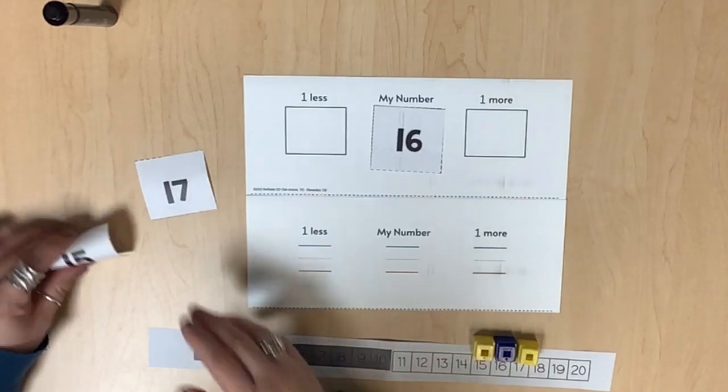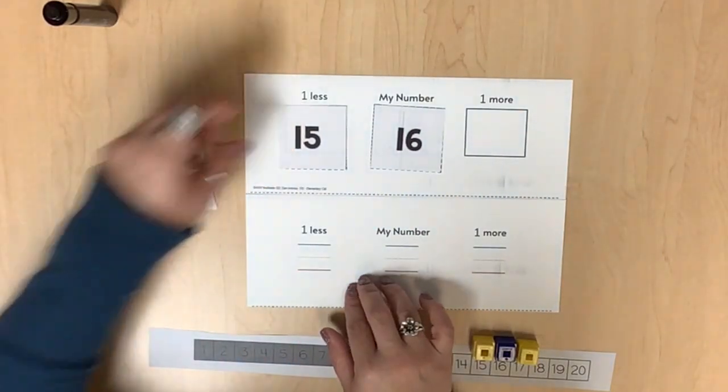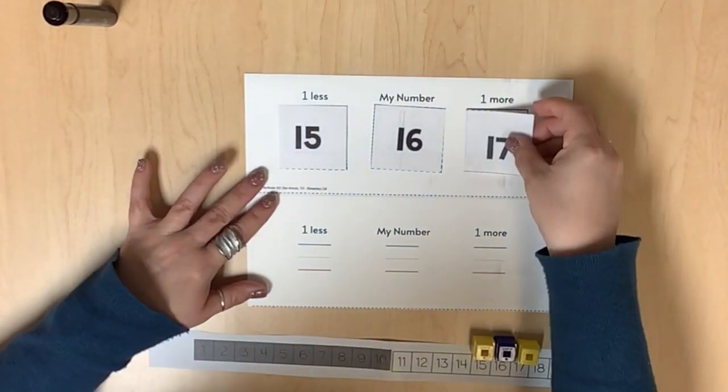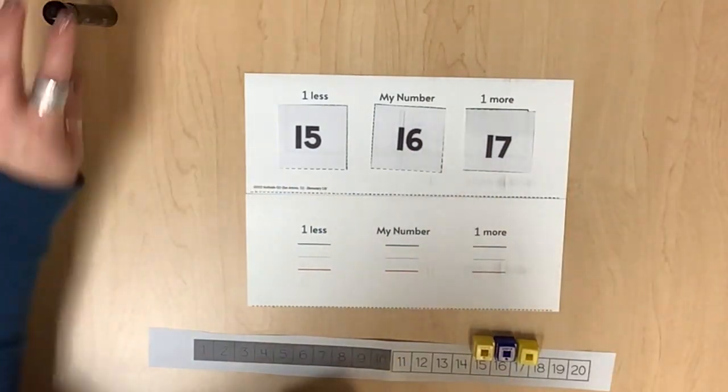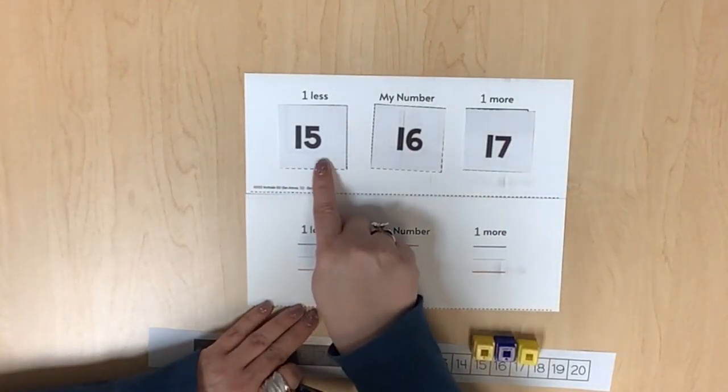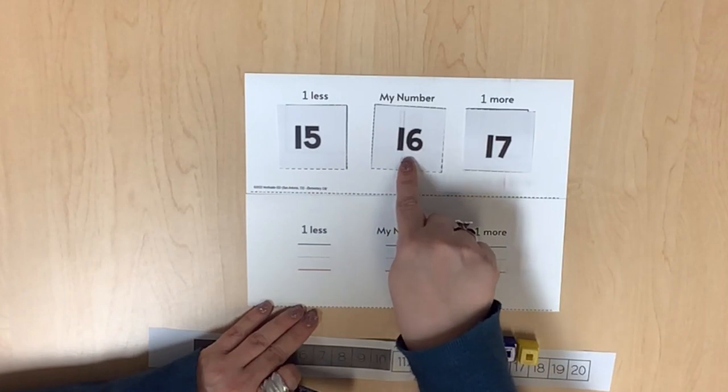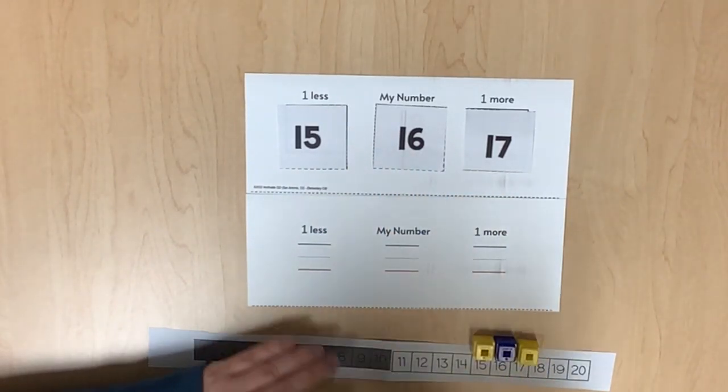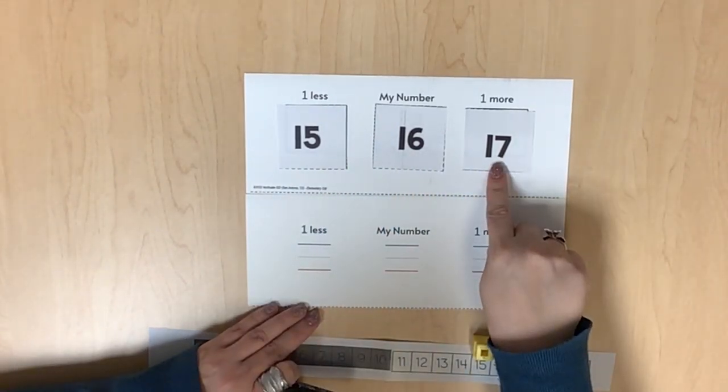Once these numbers are generated, students are to use comparative language to describe these numbers in relationship to one another. Fifteen is one less than 16. Seventeen is one more than 16.